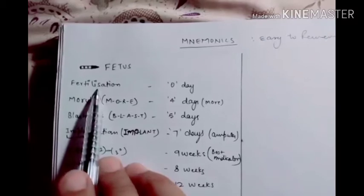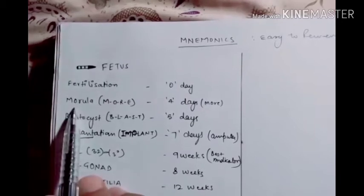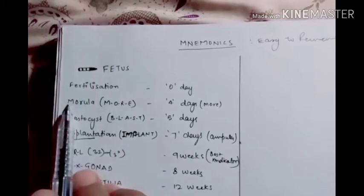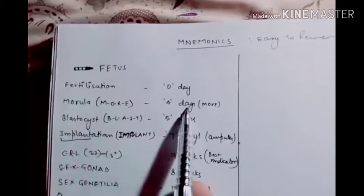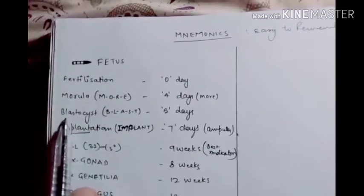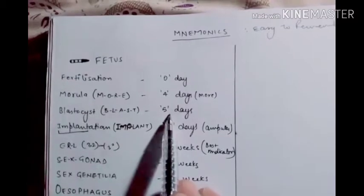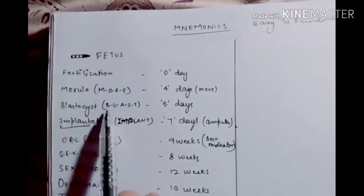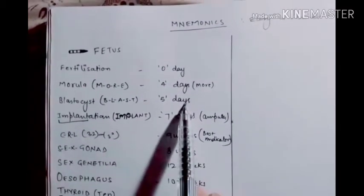We consider fertilization as day zero. For morula (M-O-R-U-L-A), count the letters in 'more' — that gives us four letters, so morula forms at four days. For blastocyst, count the letters in 'blast' (B-L-A-S-T) — that's five letters, so blastocyst forms at five days.